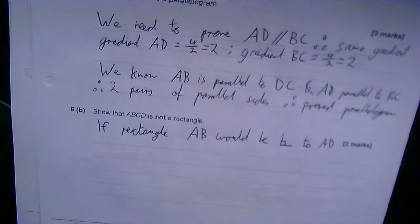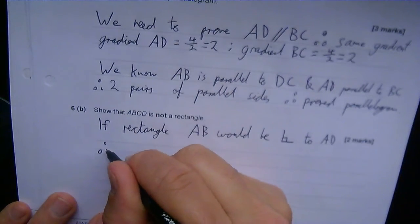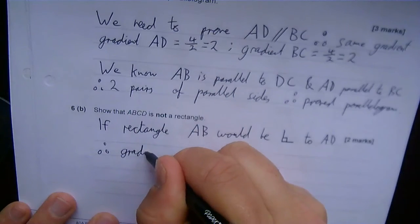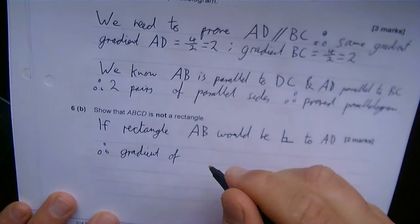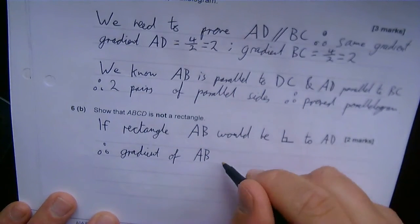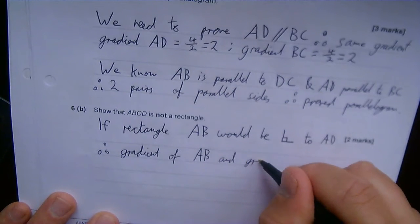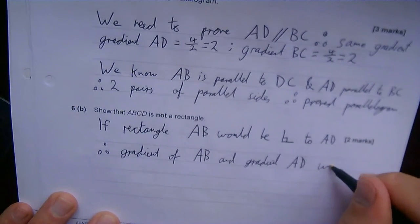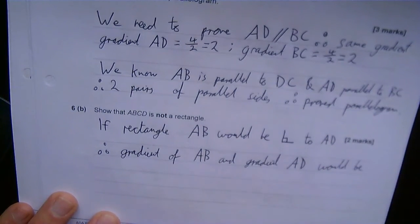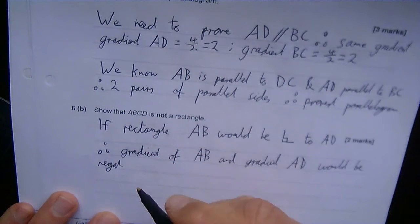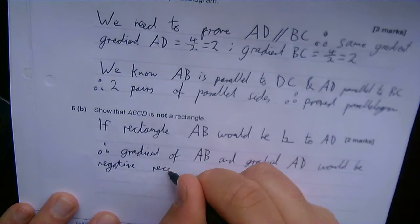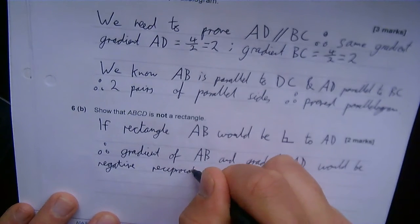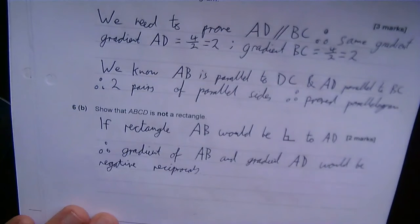So I need to prove that's not the case. So I have to prove they're not at right angles to one another. So the gradients would have to be negative reciprocals. So I'll write that down. And therefore, gradient of AB and gradient of AD would be negative reciprocals.